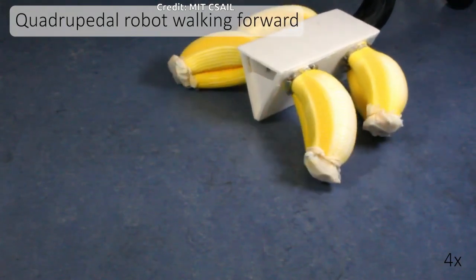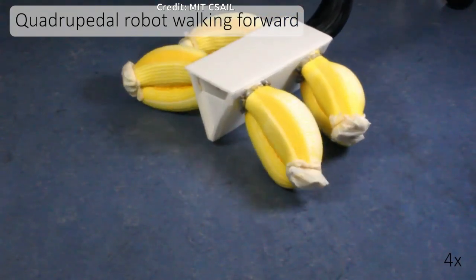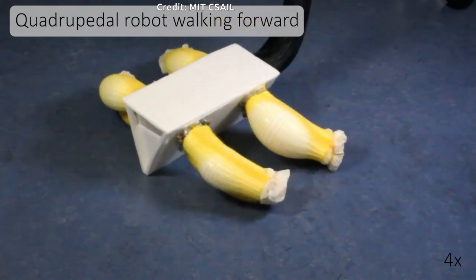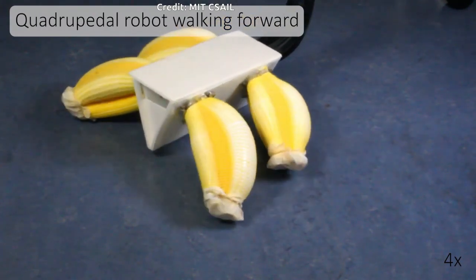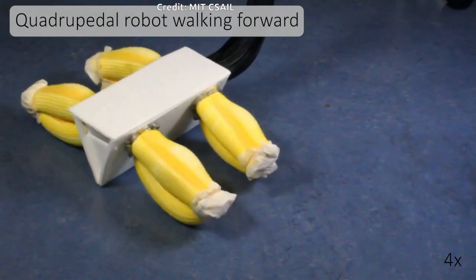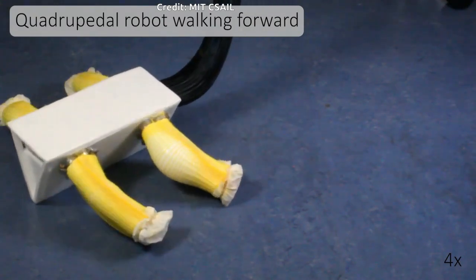One limitation of the system is that they were limited to tube-shaped actuators, because it is very easy to buy them off the shelf. A logical next step is exploring actuators of different shapes to avoid being constrained by that single structure.